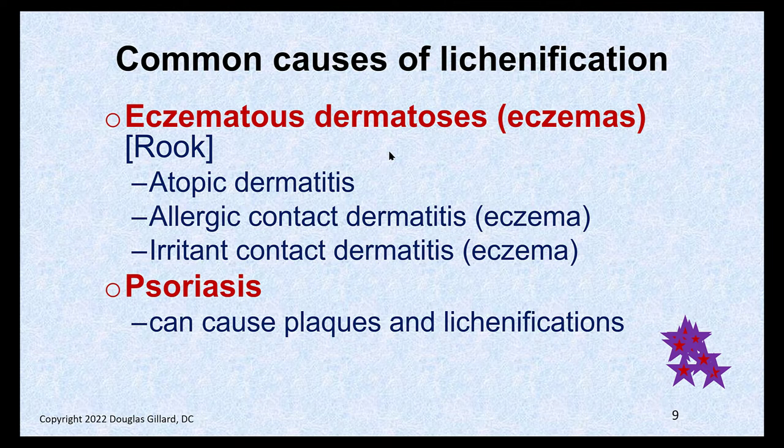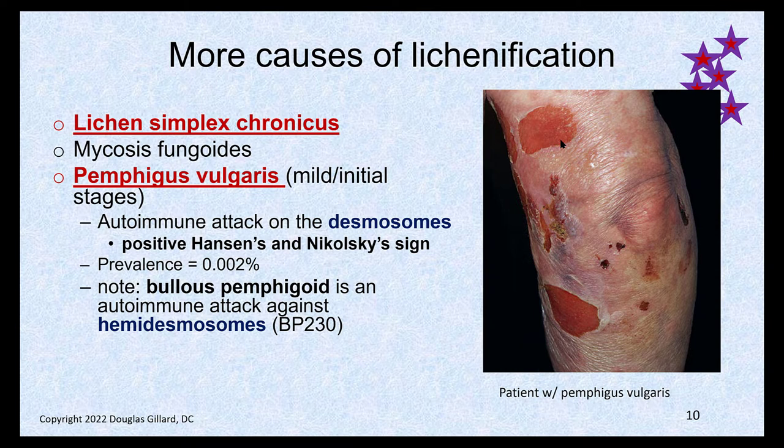What can cause lichenification? Eczemas — the eczematous dermatoses. Eczema is really not a disease in and of itself; it's a description of a skin finding. There's a bunch of different diseases that cause eczematous type lesions, like atopic dermatitis, allergic contact dermatitis, and irritant contact dermatitis. Psoriasis sometimes presents with eczematous lesions, although they eventually become plaques — but they can start out as lichenified lesions.